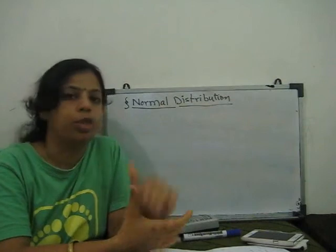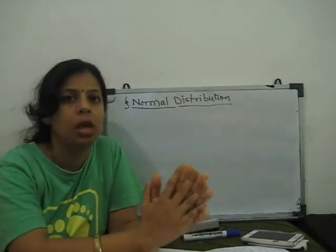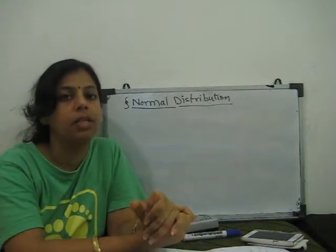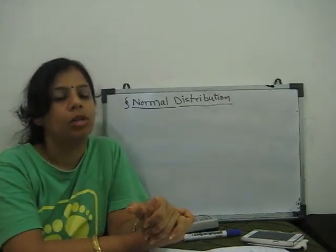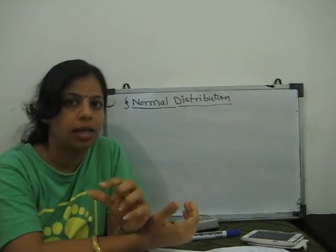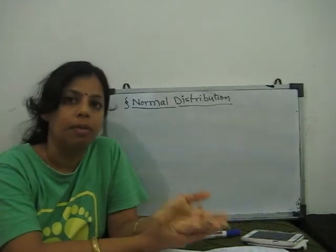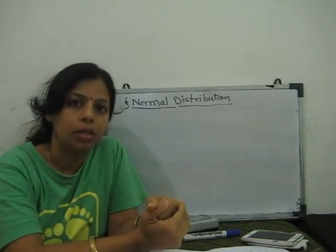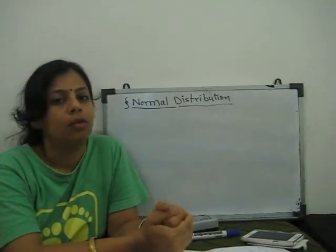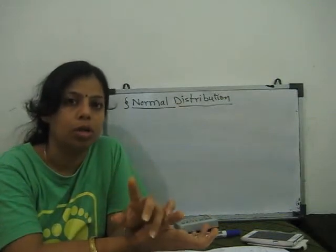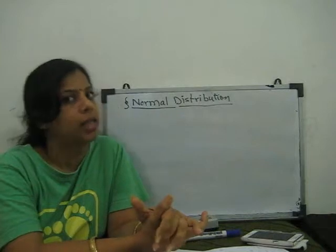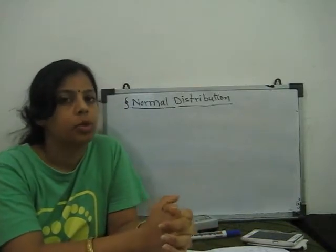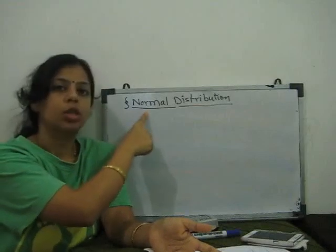We start with the word distribution. What is the meaning of distribution? Distribution means we have to divide something. In this case, we have a given set of data and we divide that data into fixed ranges and find out the probabilities for that data. For example, if we have 50 students who attempt an IQ test, we arrange the scores into fixed limits and find out the probability of how many students will score 75 percent, and so on. These types of problems we can solve with normal distribution.